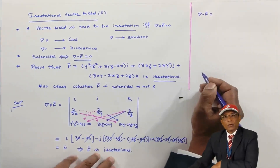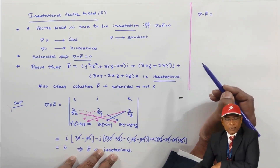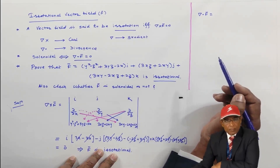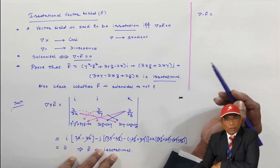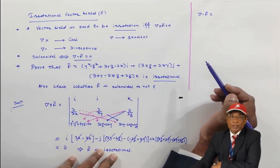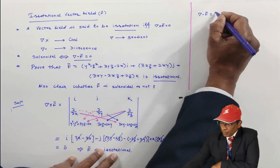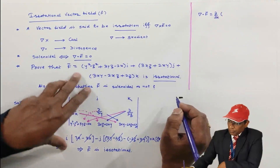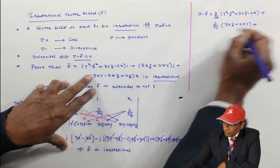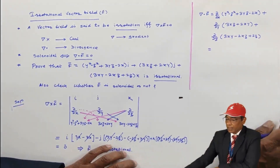Now for the next part, we check whether the given field is solenoidal. A field is solenoidal if del dot f̄ equals zero. We calculate del dot f̄ as the partial derivative of the i-coefficient with respect to x, plus the partial derivative of the j-coefficient with respect to y, plus the partial derivative of the k-coefficient with respect to z.